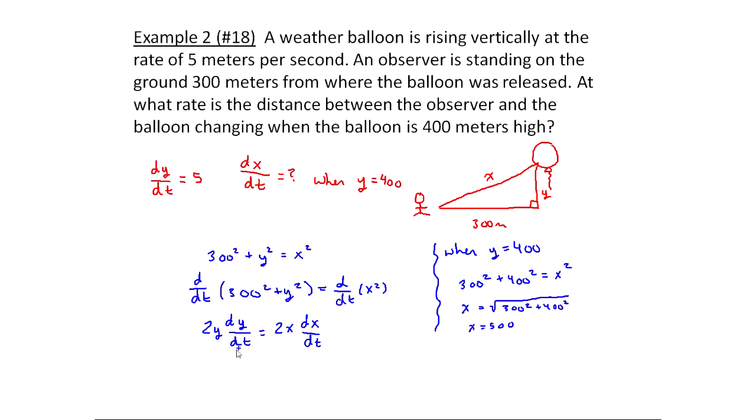Now I have all the pieces that I need. So this is going to be 2Y is 400 at that moment. Remember, derivatives are all about the rate of change at a very instant. dy/dt is 5, and this equals 2 times X at this moment is 500 meters, and then we're trying to find dx/dt. So I need to solve for dx/dt.